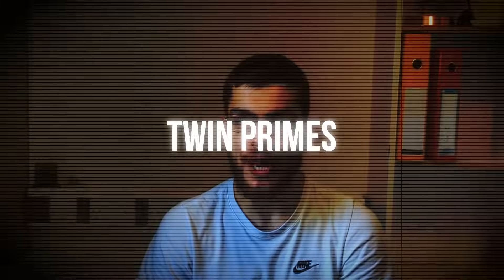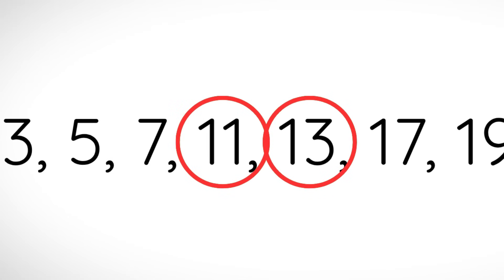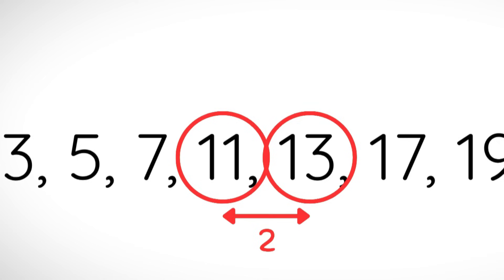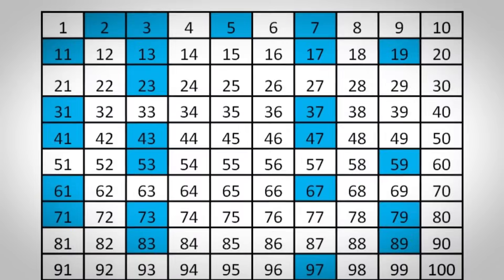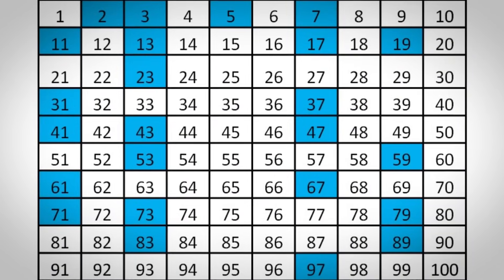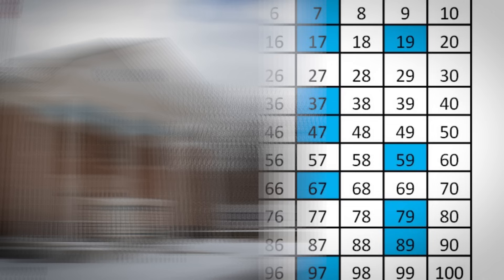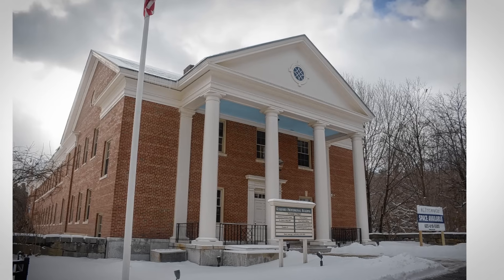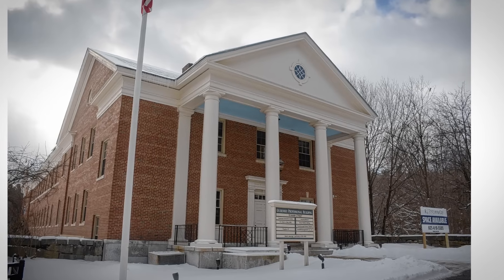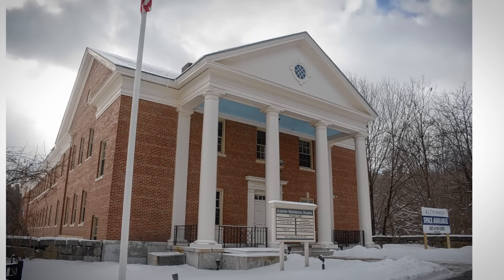Twin primes: a twin prime is the opposite of an isolated prime, so either p plus 2 or p minus 2 is prime. If you can prove that infinitely many twin primes exist, the Clay Mathematics Institute will pay you a million dollars.